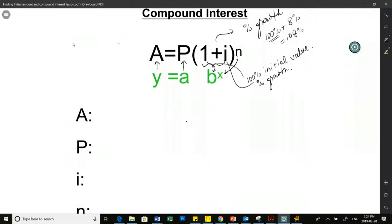So capital A is not the same as lowercase a in our old formula. Capital A means future amount. The B is the 1 plus i, which is 100% plus growth.